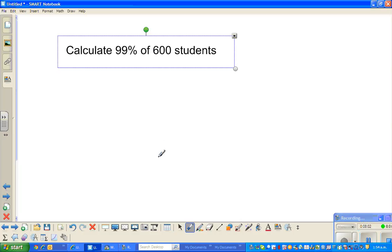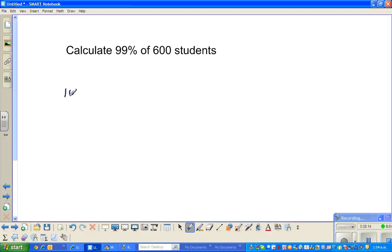Let us look at this question: find 99% of 600 students. Here, let's start with 10%. 10% is one tenth, which is 60. I'm thinking, what is 90%? 90% would be 9 times of this, so 60 times 9, which is 540.